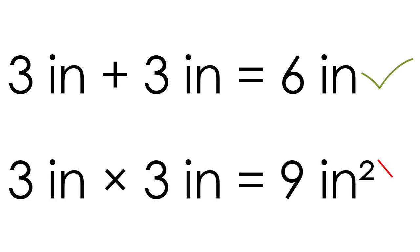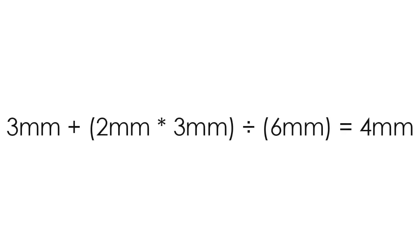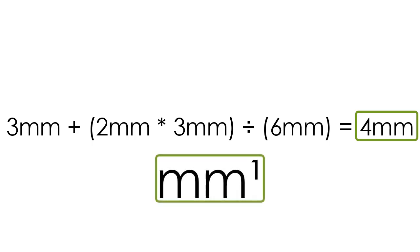3 inches times 3 inches would not be allowed, as it results in a unit of inches squared. A more complex example, such as 3 millimeters plus 2 millimeters times 3 millimeters divided by 6 millimeters would be allowed, since the final computed value results in 4 millimeters, with a unit to the first power.